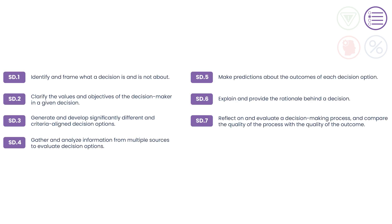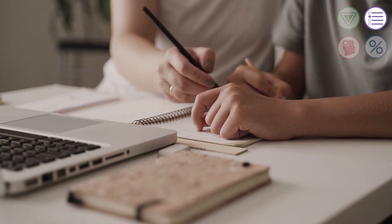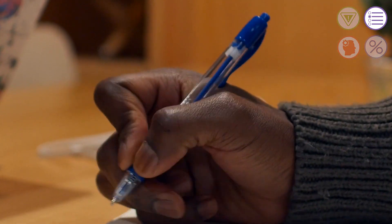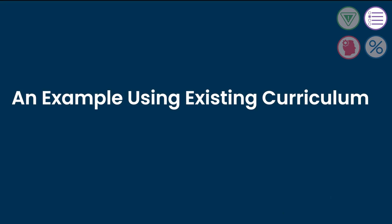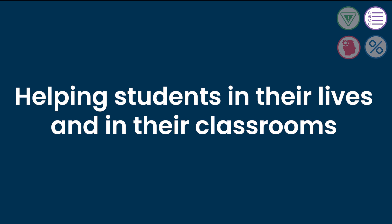Each of the seven standards in this domain align with one step of a decision-making process. There are lots of ways that structuring decisions can play out in classroom learning. Some teachers might use a standalone unit to guide students through important decisions. For example, one high school teacher helped her students evaluate and propose a new cell phone policy for their school. Going through each step of a decision-making process, the students analyzed what they and other stakeholders valued, researched options, predicted possible outcomes, and ultimately created and proposed a new policy for their school. Other teachers might map these standards onto their existing curriculum. Another high school English teacher taught students the parts of a decision-making process, then had them immerse themselves into the life of the main character in a work of fiction. Using the parts of a decision-making process as their guide, students analyzed the main character's decisions and the consequences of those decisions as if they were their own. The skills developed in this domain help students work methodically through the big decisions in their lives or that they're learning about.